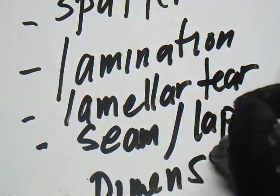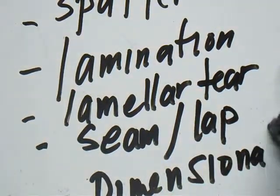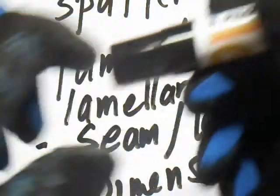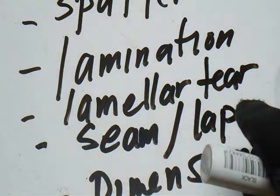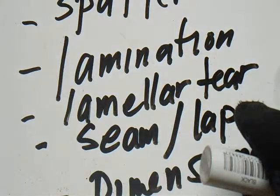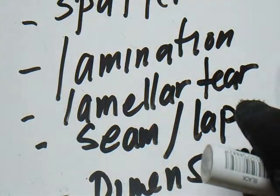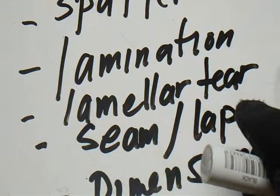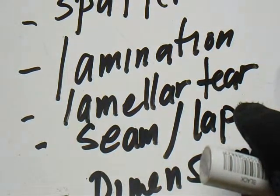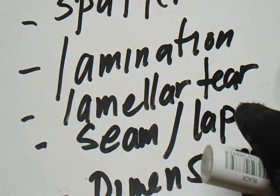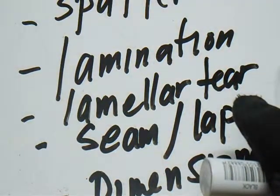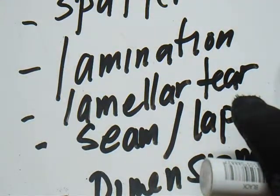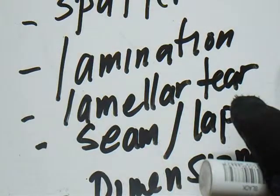So all of this is metal discontinuities. We have 18 discontinuities, with number 1 being the most noted defect as well. Please take note — all of this can be found in the AWS Standard A3.0, Standard Welding Terms and Definitions.